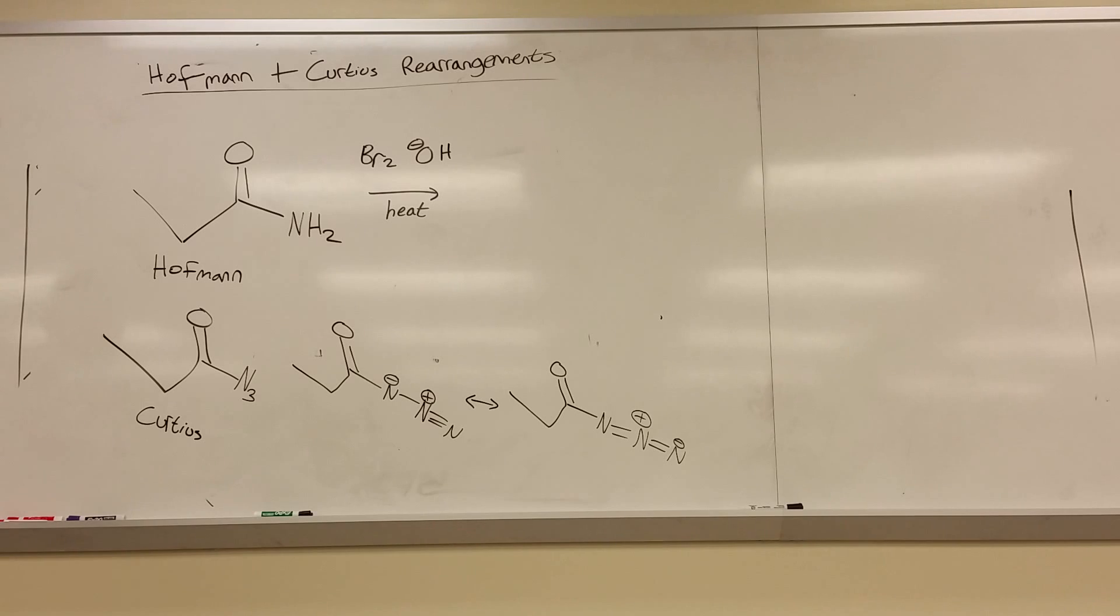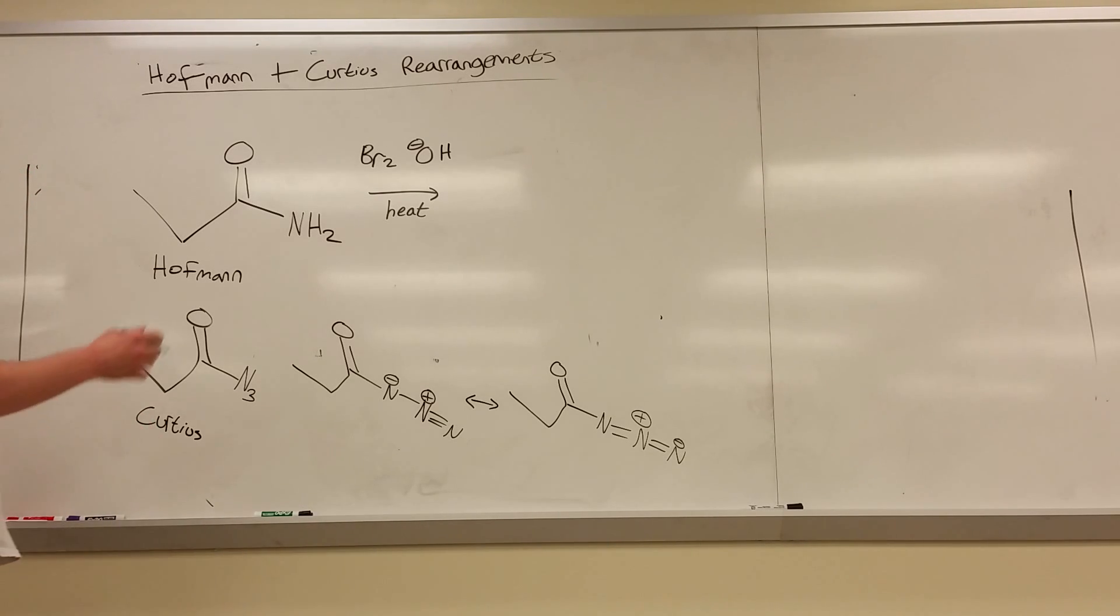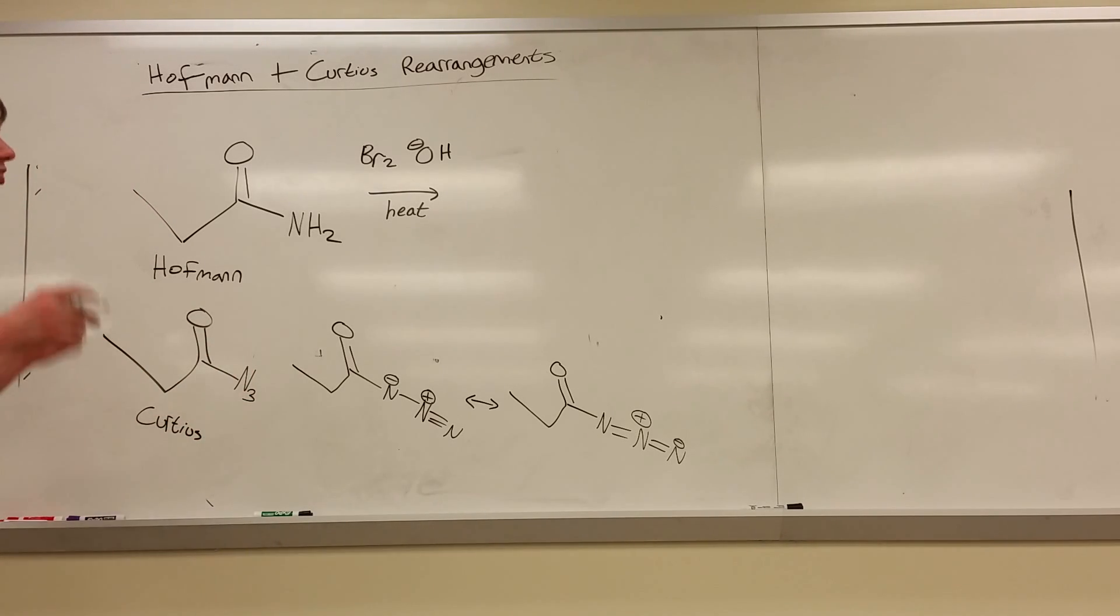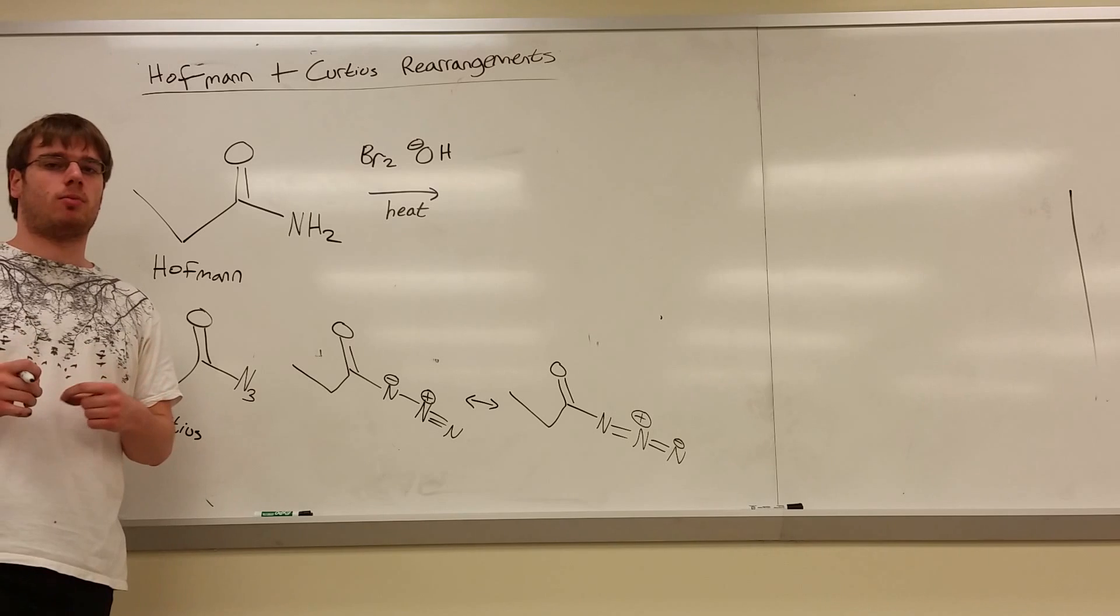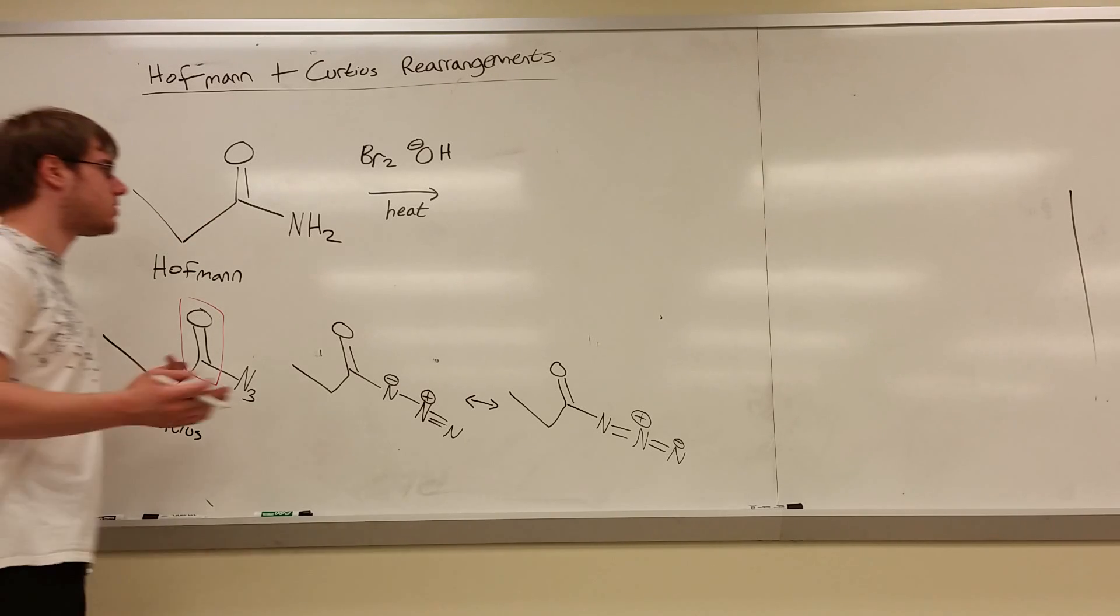But the product that you should expect from them is the same. So what ends up happening is, in both cases, you are going to be removing a carbon. And that carbon you're removing will be the C with the double bond O. Basically, all you're going to do is erase that oxygen, erase that carbon, and connect the two ends together. So let's start with the Hoffman and see what we should expect from this.